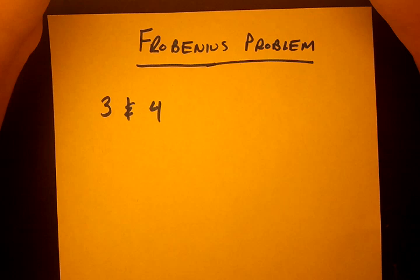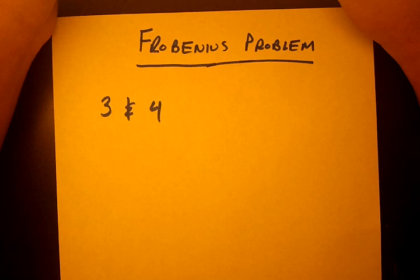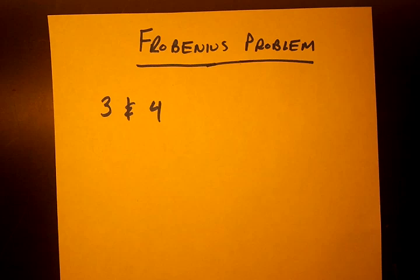In this video, we'll be talking about the Frobenius problem. And to understand the Frobenius problem, we first have to understand what Frobenius numbers are. So the Frobenius number of a set of numbers is the smallest number that we can't form using those numbers. So let's just use an example to demonstrate.